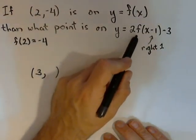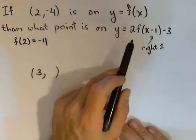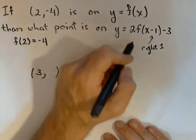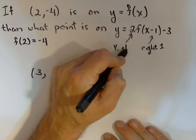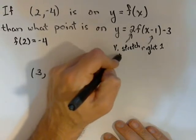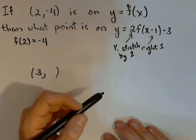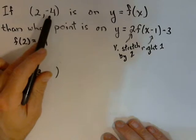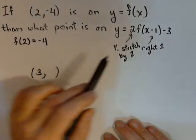First, we can see that we have a 2 times f of x, because on vertical transformations it's going to follow order of operations. What that's going to do is it's going to be a vertical stretch of 2. So vertical stretch by a factor of 2. That's going to double all our y-values. So our old y-value was negative 4. Our new y-value is going to be negative 8 when it's doubled.